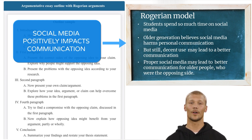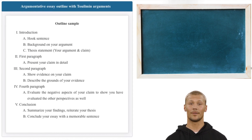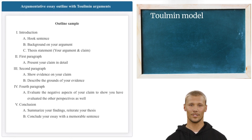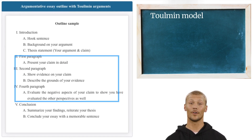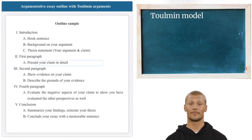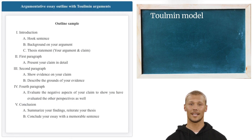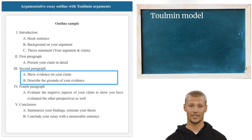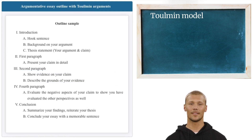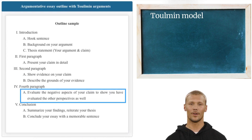Let's now have a look at the Toulmin Argument. Like the Rogerian argument, the Toulmin model is also based on a four-step approach. Similar to Rogerian, after the introduction there are three body paragraphs that follow the model strictly. The first paragraph presents your claim in detail. In the second paragraph, you first show evidence then describe the grounds of your evidence. And finally, in the last paragraph, you show the reader that you have also considered the negative aspects of your claim.